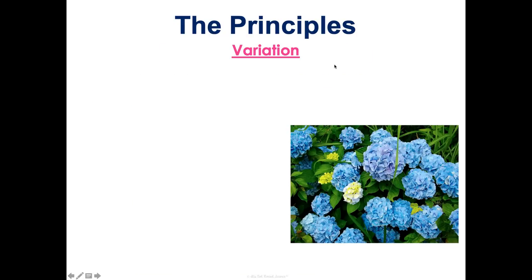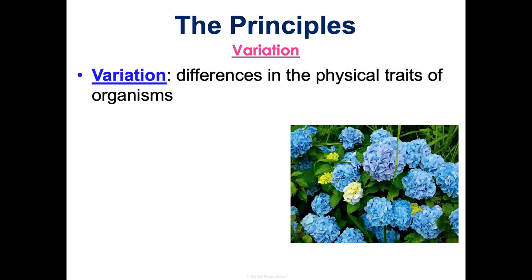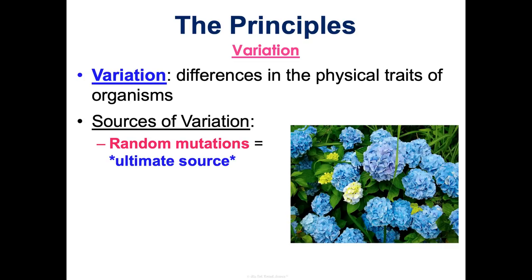That competition creates differentiation between more fit and less fit individuals, and that differentiation comes from variation. In every population there's variation — differences in physical traits — and no population is made of clones. We get variation from random mutations, genetic recombination during meiosis — remember prophase one and crossing over where homologous chromosomes swap sections of DNA, creating new gene combinations — and then migration and gene flow, moving into a new environment and introducing new genes by reproducing there. The last two only apply to sexual reproducers.